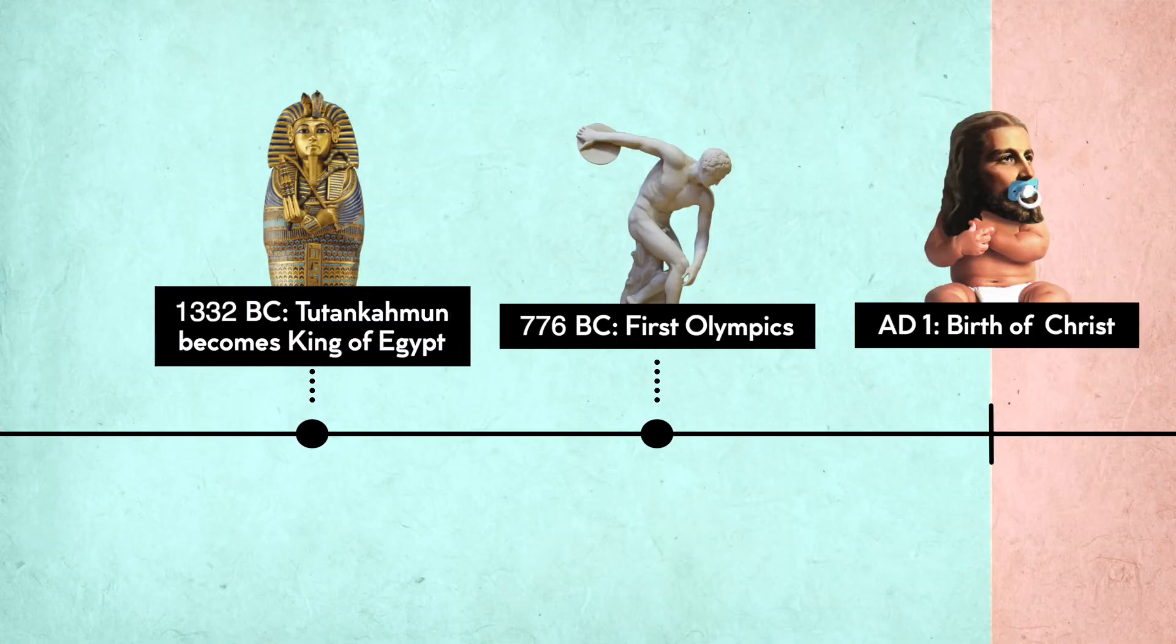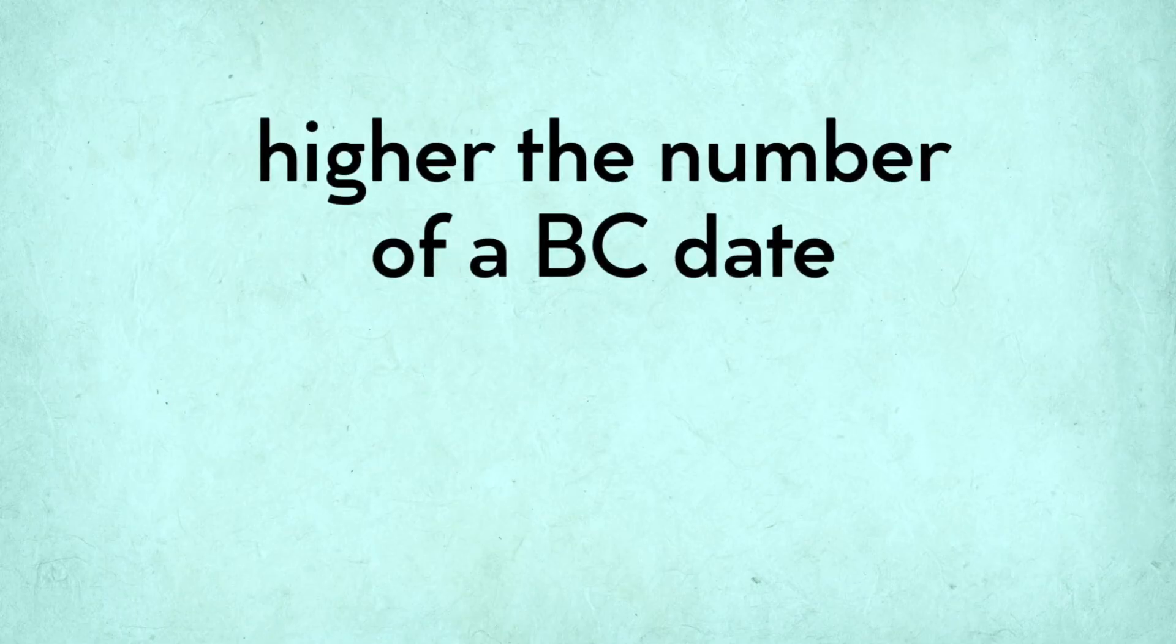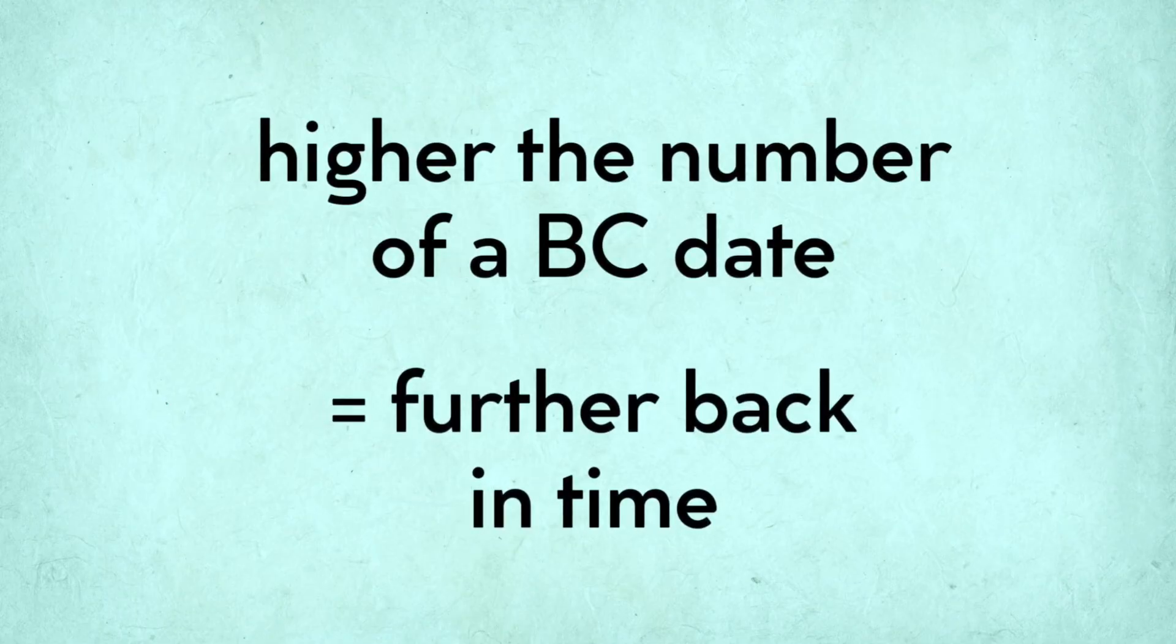So that's why a date like 1332 BC is further back in time than a date like 776 BC. Basically, the higher the number of a BC date, the further back in time it is.